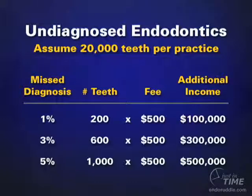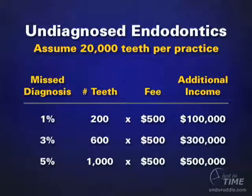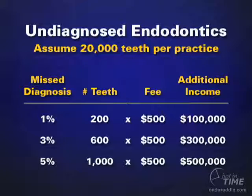Let's make some business-like assumptions — take off your clinical hat and put on your business hat. If you have 1,000 active patients — if you're just out of school you might have less, if you've been out a few years considerably more, but this is just an assumption — and each patient has only 20 teeth, then 20 times 1,000 is 20,000. The assumption is that you are the custodian of 20,000 teeth.